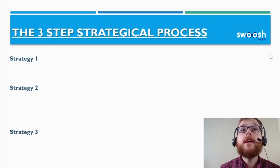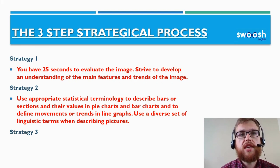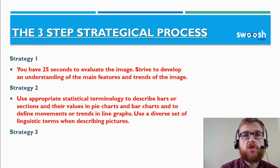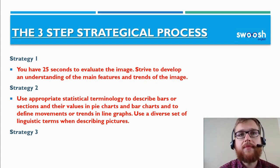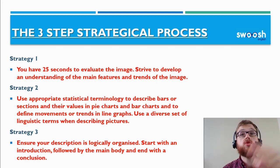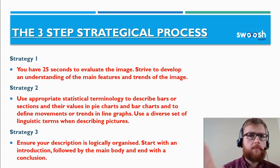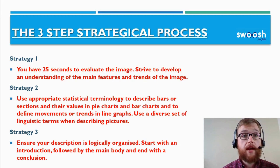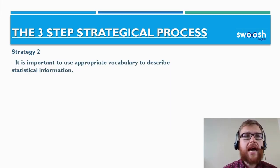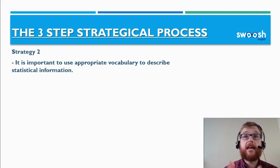Here is our PR3 three-step strategic process for the PTE describe image task. Strategy 2 is using appropriate statistical terminology to describe bars or sections and their values in pie charts and bar charts, and to define movements or trends in line graphs. Use a diverse set of linguistic terms when describing pictures, being quite academic and formal. It's important to use appropriate vocabulary to describe statistical information, incorporating varied verbs and adverbial phrases into your response.